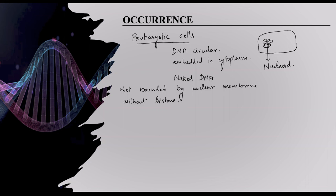Many prokaryotes also possess an extra chromosomal small circular segment called a plasmid. These plasmids consist of genes that give genetic advantages like antibiotic resistance, decorative functions, and also virulence. So plasmids are also helpful for the bacteria.